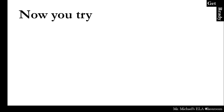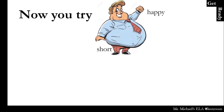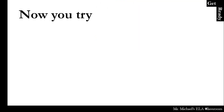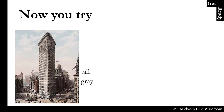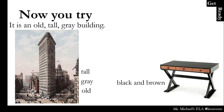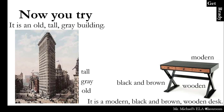So now you try. Short, fat, happy — He is a happy, short, fat man. Tall, gray, old — It is an old, tall, gray building. Black and brown, wooden, modern — It is a modern, black and brown, wooden desk.